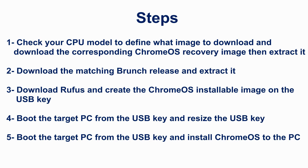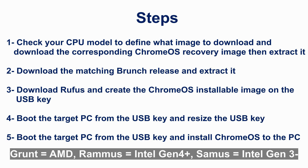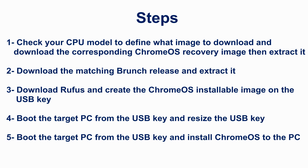Here are the high-level steps. First, check the CPU model of the PC you're installing Chrome OS on, because in this method there are three images depending on the CPU. If you have an AMD model, download the image called Grunt. If you have an Intel Gen 4 or higher, download Ramus. If you have an Intel Gen 3 or lower, download Samus — which is what we'll use in this video.